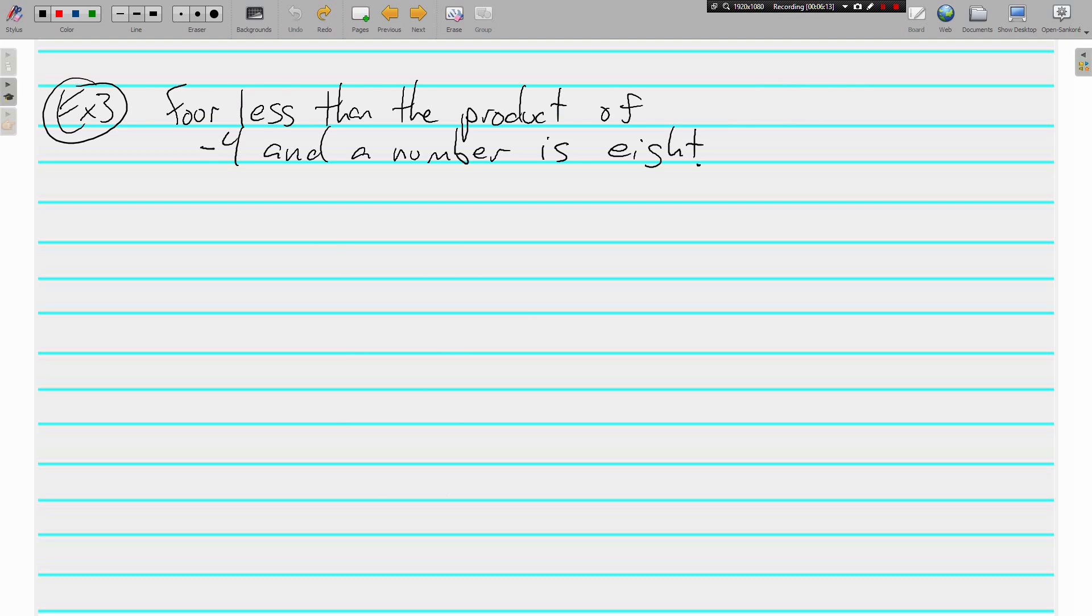Example three. Four less than the product of negative four and a number is eight. Okay, getting a little longer here. Four less than the product of negative four and a number is eight. I like that is. I like that is. And then obviously the eight is eight. Now let's look at the other part of it. What do we have here? We have four less than. Four less than. There's going to be a minus somewhere. Product. Product means multiply.